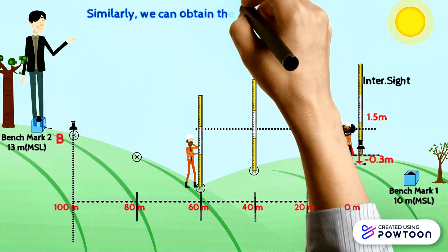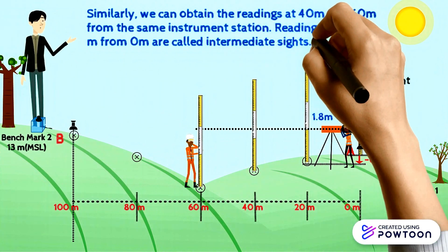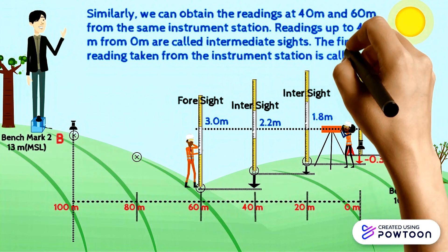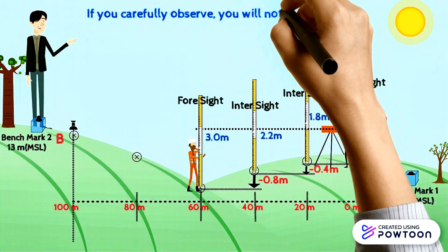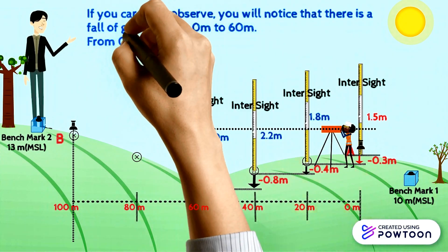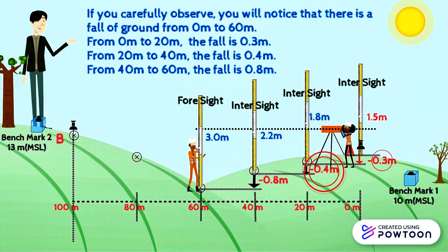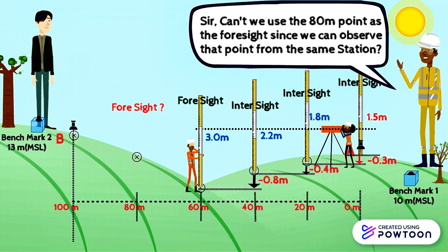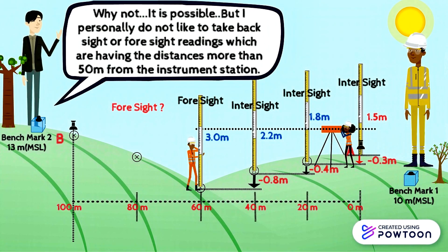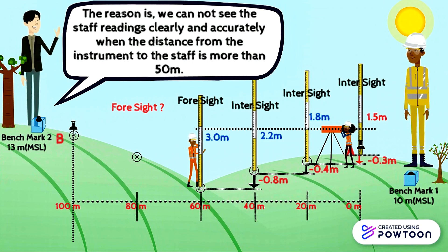Similarly, we obtain readings at 40 meters and 60 meters from the same instrument station. Readings up to 40 meters are called intermediate sights, and the final reading taken from the instrument station is called foresight. There is a fall of ground from 0 meters to 60 meters: 0.3 meters from 0 to 20, 0.4 meters from 20 to 40, and 0.8 meters from 40 to 60. I personally don't like to take backsight or foresight readings at distances more than 50 meters from the instrument station, because we cannot see the staff readings clearly and accurately beyond that distance.